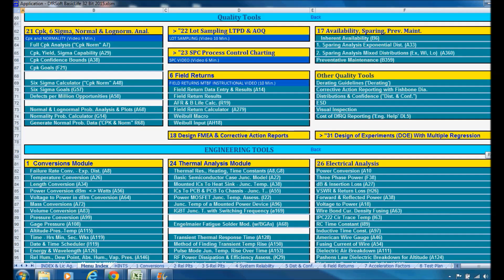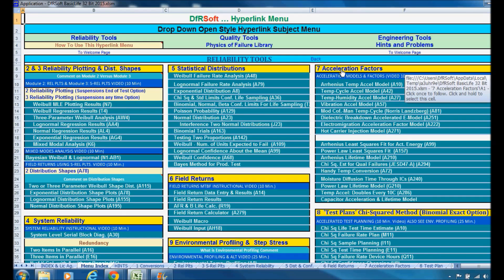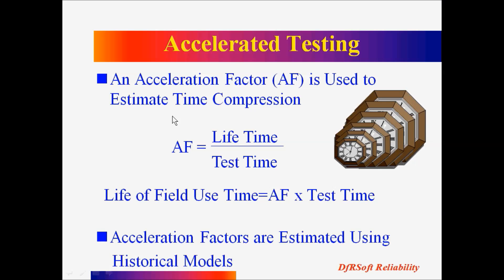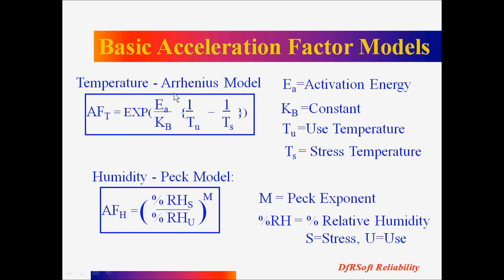There's an awful lot of great tools, and we're going to hyperlink to the acceleration factor page. But first, we're going to look at some slides. What is an acceleration factor? It's a measure of time compression when you do an accelerated test. You do a temperature test at a raised elevated temperature compared to the use temperature in the field, stressing it at a higher rate. Your acceleration factor times your test time gives you an indication of your lifetime or field use time achieved from your accelerated test, and we get these factors from historical models. For example, the temperature model — accelerated stress testing for temperature — is given by an Arrhenius model.